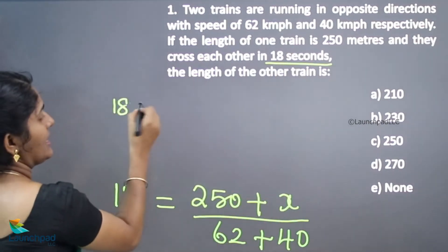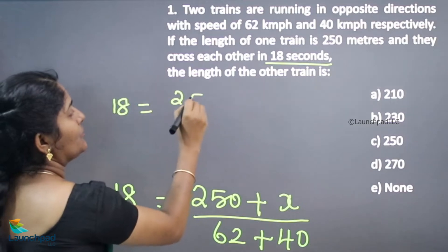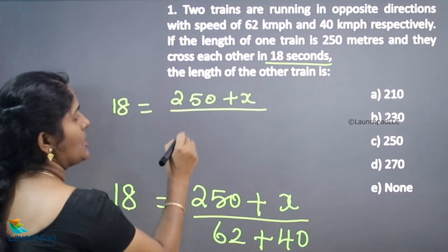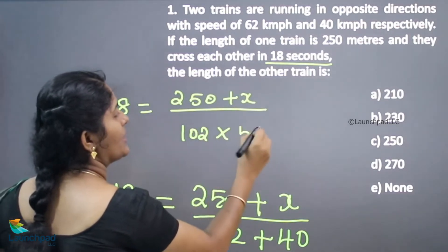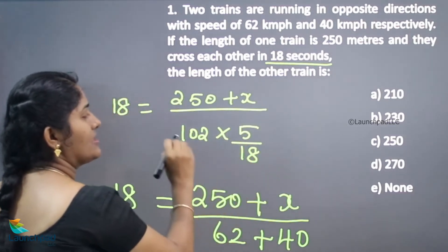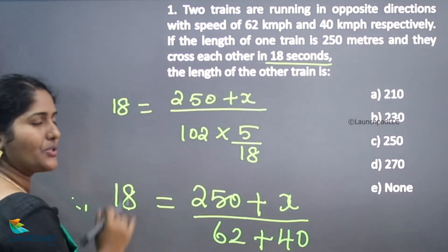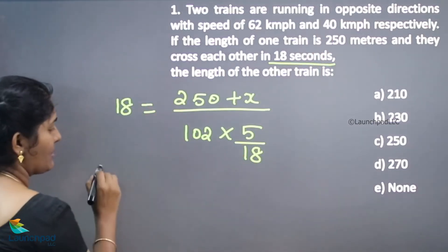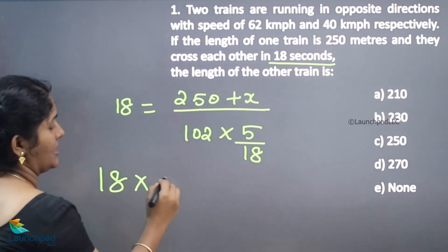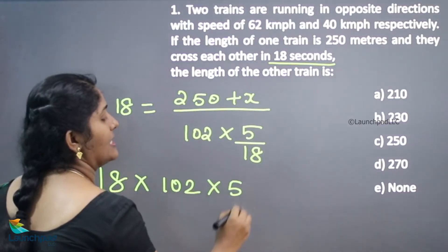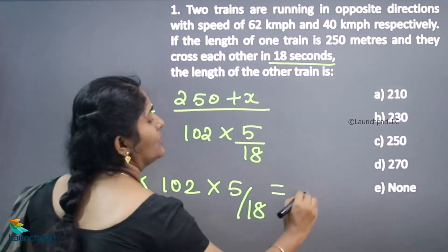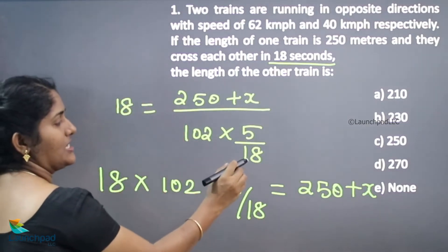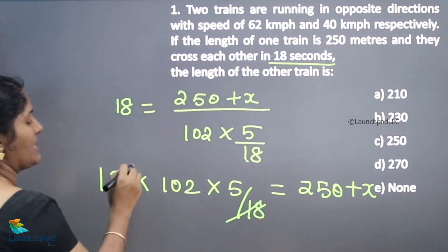So: 18 seconds equals 250 plus x, divided by (40 plus 62 = 102), multiplied by 5 over 18. This is the conversion of kilometers per hour into meters per second. Moving the denominator across, it will be multiplied on the other side — and observe that the 18 cancels.